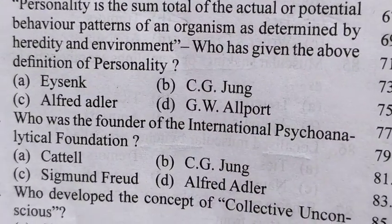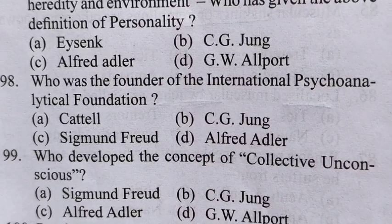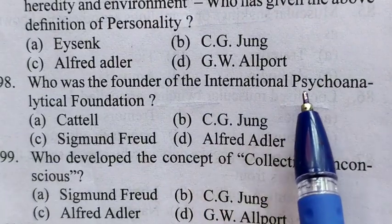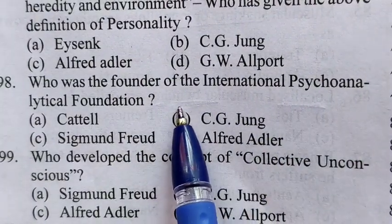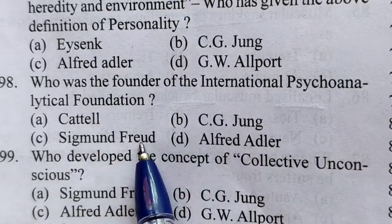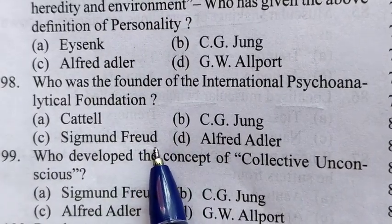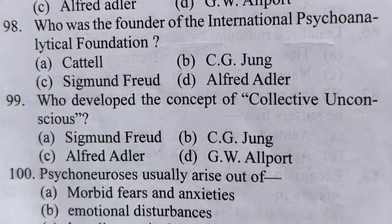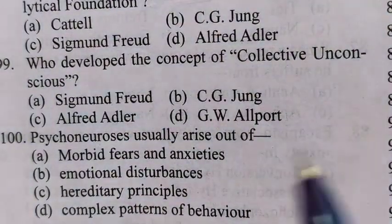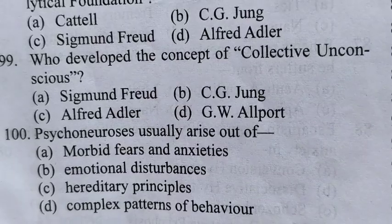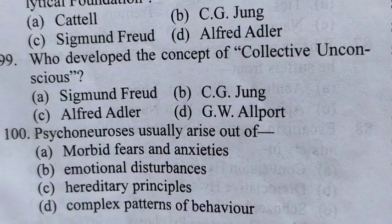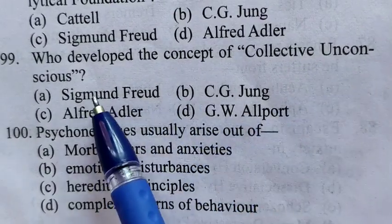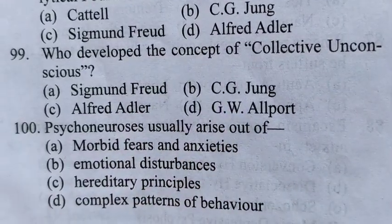98th question: Who was the founder of the International Psychoanalytical Foundation? 99th question: Who developed the concept of collective unconsciousness — samuhik achetna, matlab samuhik roop se chetna mein na rehne ka jo concept hai, yeh kisne diya? 99 ka answer hai B, C.G. Jung ne diya.